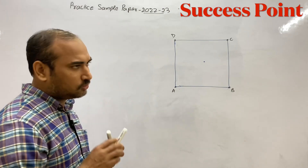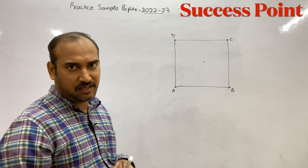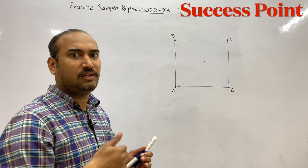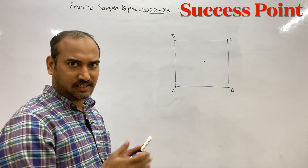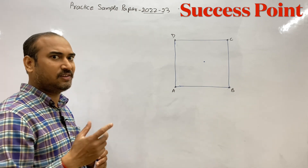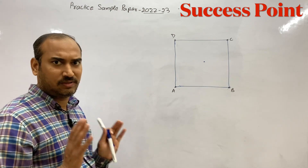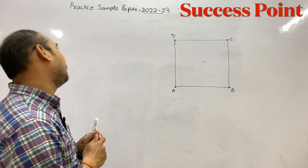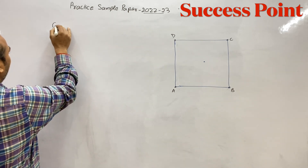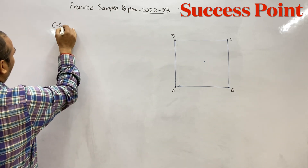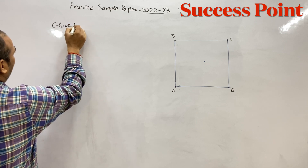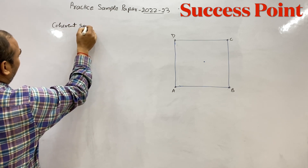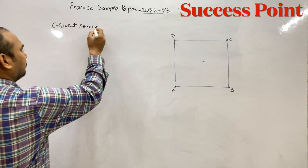Phase difference constant रहता है, जो भी है — इसका मतलब हम coherent source की बात कर रहे हैं. तो यहाँ पर उन्होंने coherent source की बात कर ली है. (The phase difference remains constant, which means we are talking about coherent sources. So here they have referred to coherent sources.)